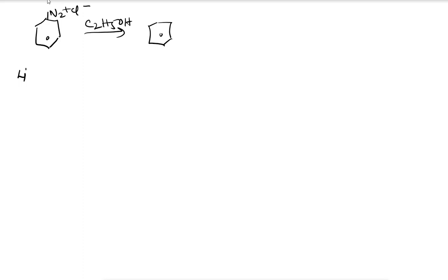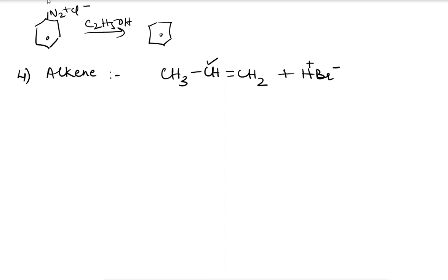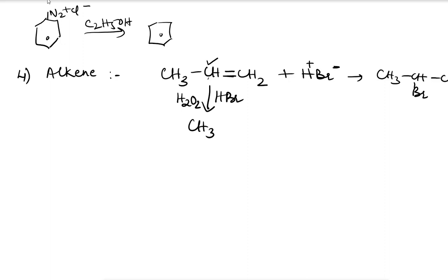Preparation from alkene uses Markovnikov's rule. Markovnikov's rule states that the negative part of the addendum — when we react with HBr — goes to the carbon atom containing the lesser number of hydrogen atoms across the double bond. So we get CH3CHBr. When I add HBr with H2O2, we get the anti-Markovnikov product.